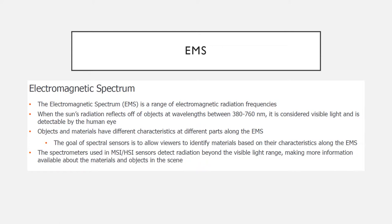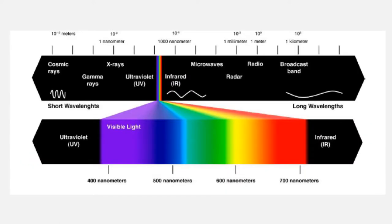A group of frequencies along the electromagnetic spectrum — the spectrometers used in multispectral and hyperspectral sensors detect a lot of radiation that's outside the visible range, which makes them quite useful because we can get more information than what we can actually see. Here is the electromagnetic spectrum if you've forgotten what it looks like.